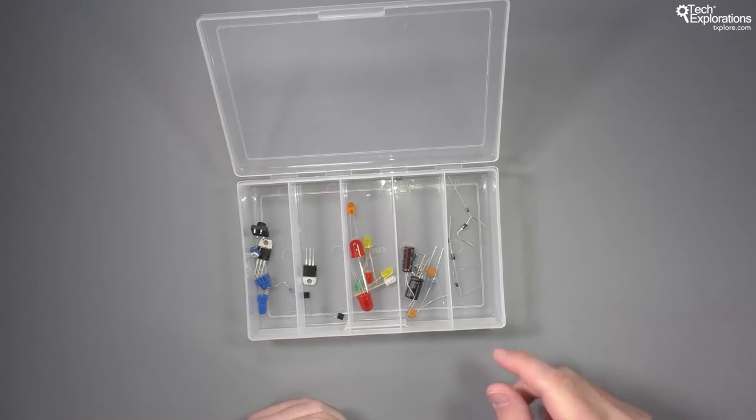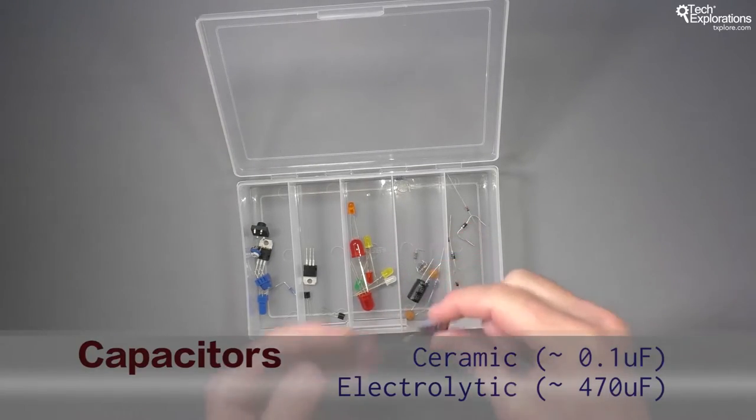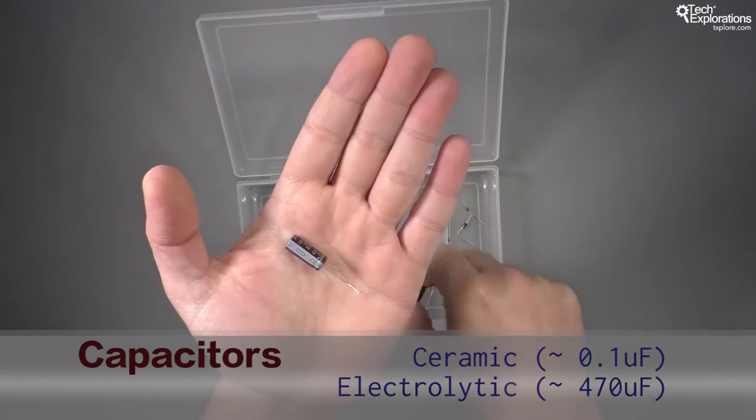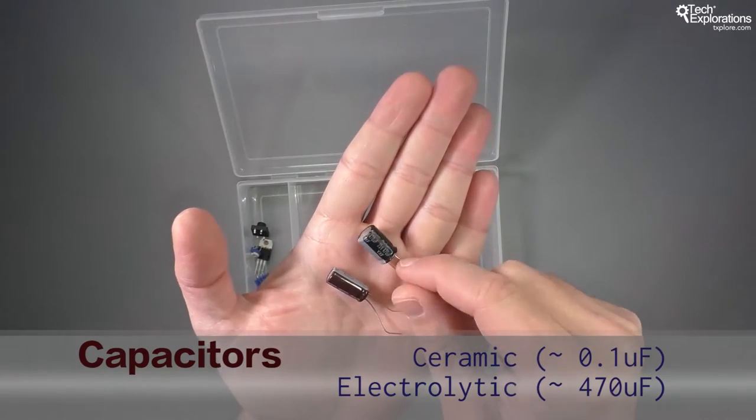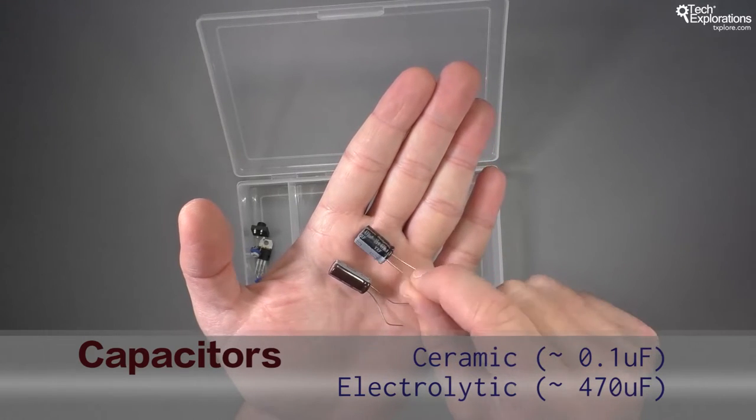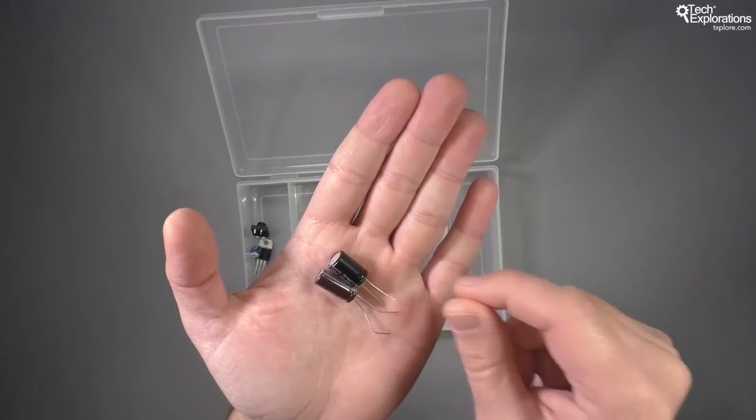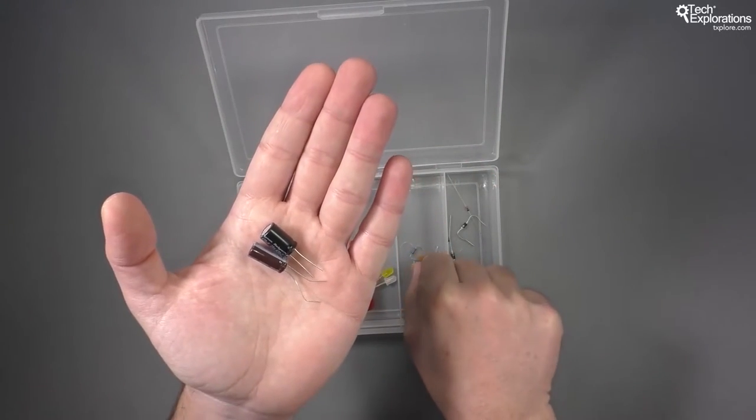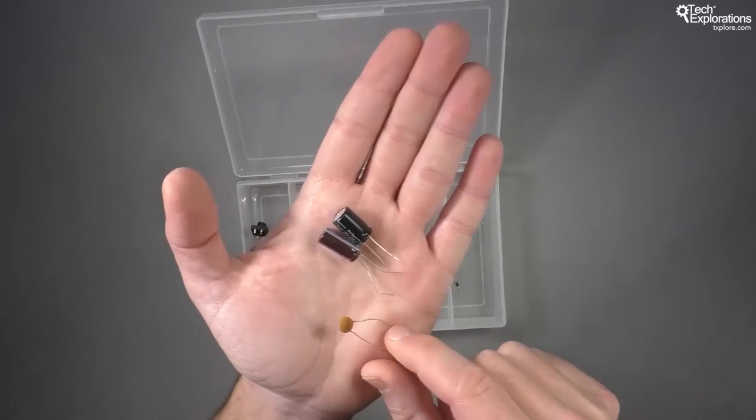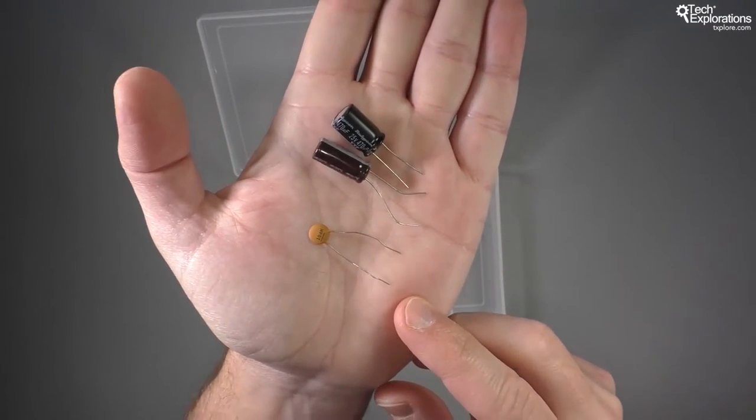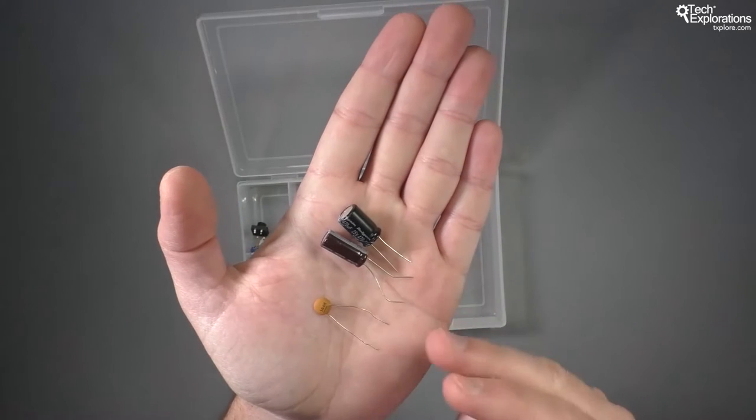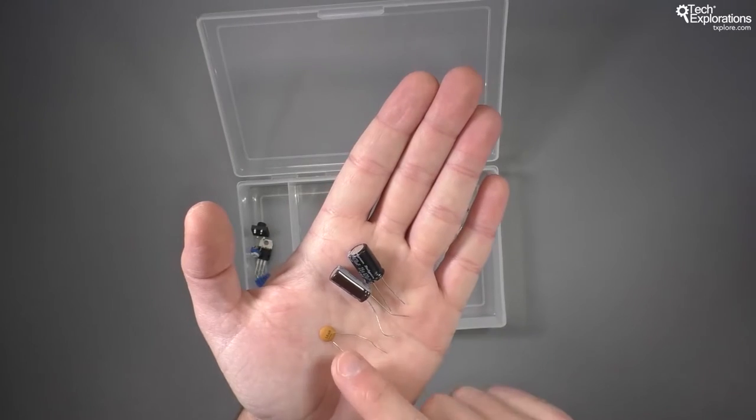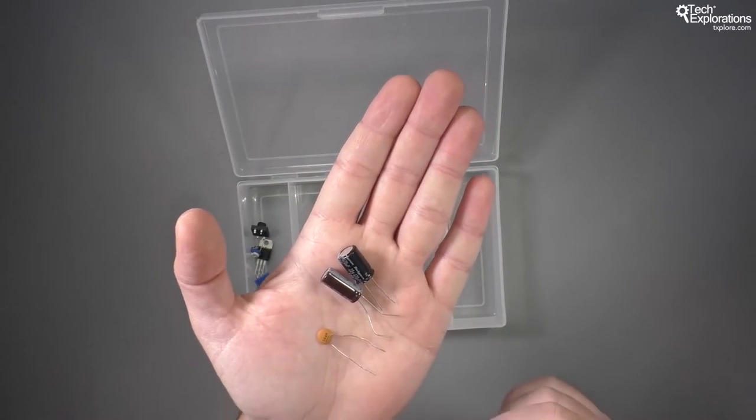Then we've got capacitors. Electrolytic capacitors like these are very common as well, used for things such as energy stores for motors or to smooth out voltage for a power supply. Also, ceramic capacitors like this one here are very common. You can be perfectly fine and not need anything else by having a bunch of ceramic and electrolytic capacitors.